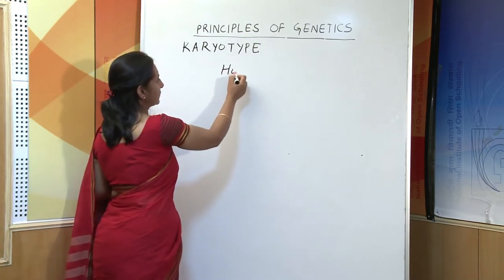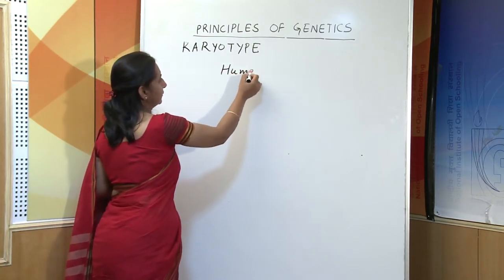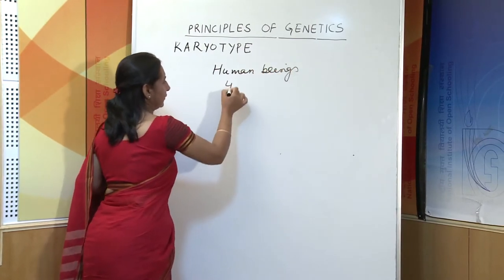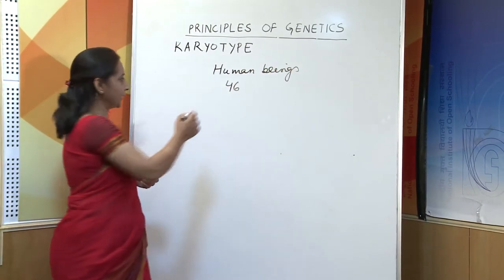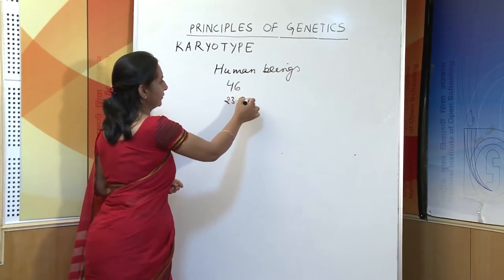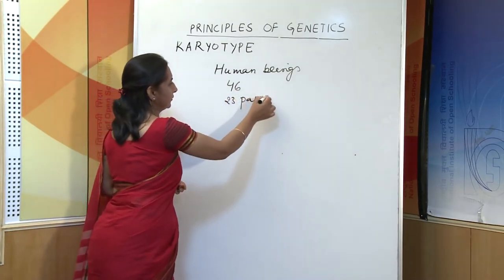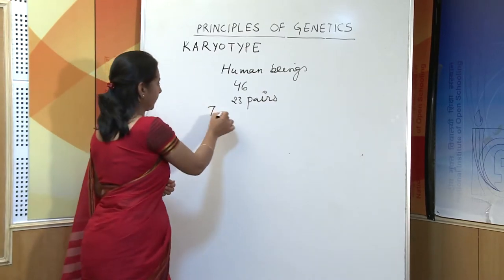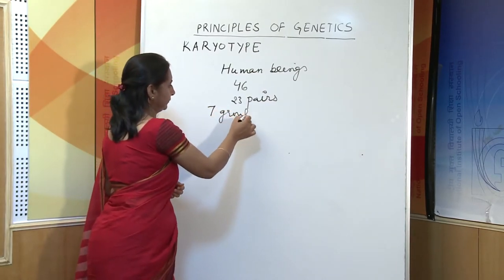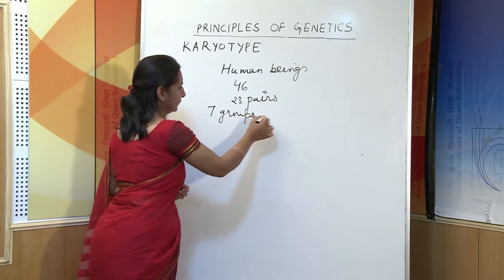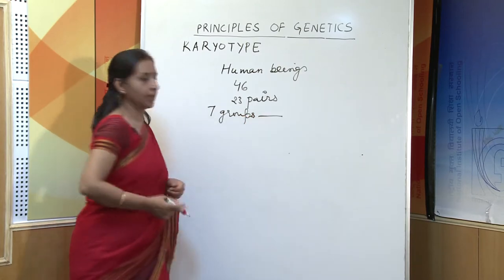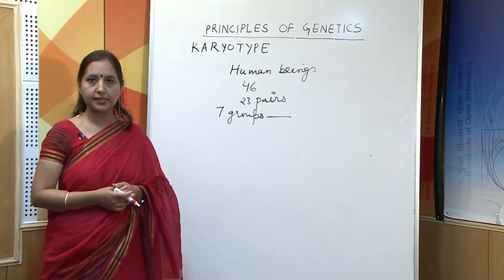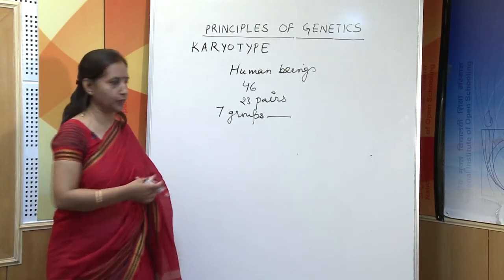In the case of human beings, there are 46 chromosomes, that is 23 pairs, and they are arranged in 7 groups. The basis on which they are classified is their size and the position of the centromere.